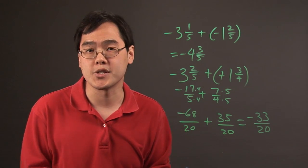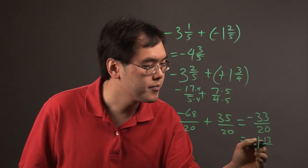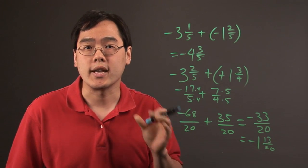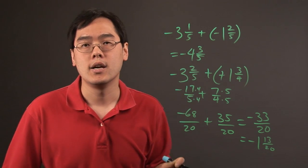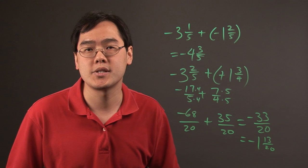And then you can reduce into a mixed number from there if you like. And this will be negative one and 13-twentieths. So as you can tell, subtracting negative mixed numbers will take a little more time than adding negative mixed numbers. So I'm Jimmy Chang, and that's how to add and subtract negative mixed numbers.